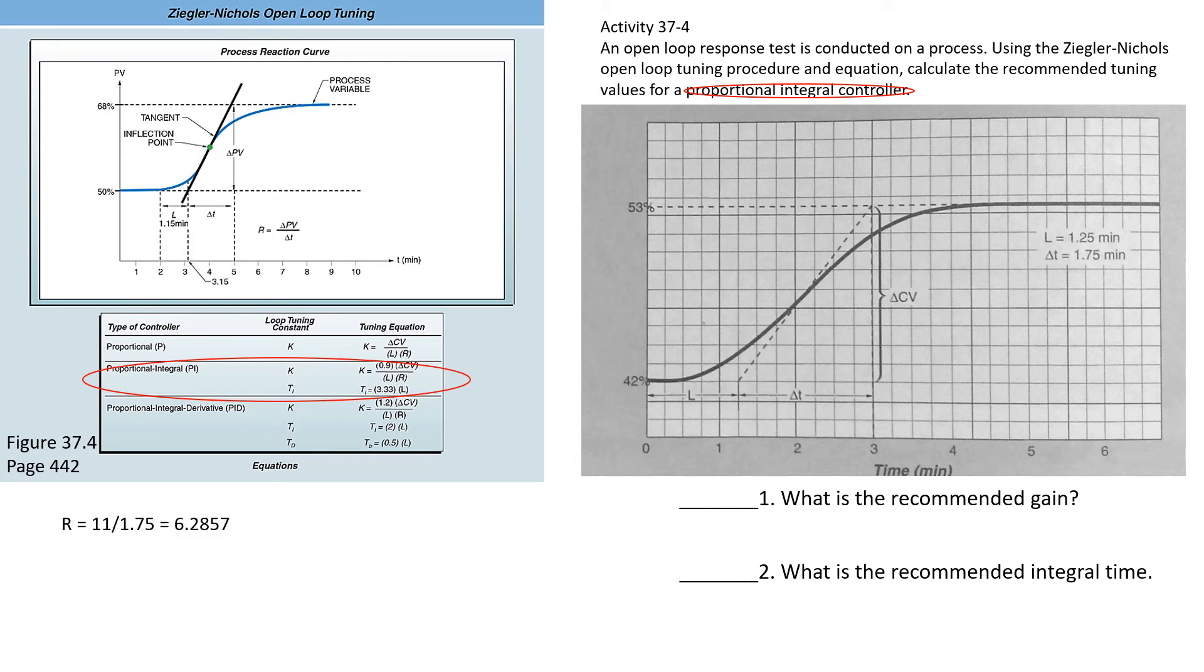R is 11 over 1.75—53 minus 42 over 1.75, which is from basically 1.25 until 3—that gives us 6.2857. We plug that into our equation for K: 0.9 was a constant, that's our Delta CV right there, R, L times R, and we end up with 1.575 or 1.56 depending on how you want to round that. That is the answer for number one.